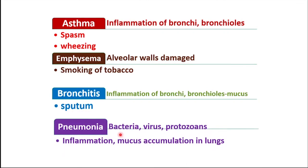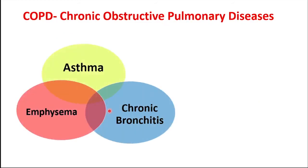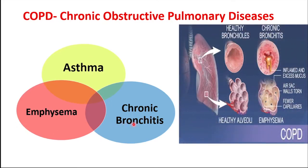The fourth disorder is pneumonia, caused by bacteria known as Streptococcus pneumoniae. Viruses, protozoans, and mycoplasmas also cause pneumonia. The main symptoms are inflammation and mucus accumulation in the lungs. Asthma, emphysema, and chronic bronchitis come under chronic obstructive pulmonary diseases (COPDs) — the group of lung diseases that block the airflow and make breathing difficult. Mainly emphysema and chronic bronchitis are the most common conditions that make up COPD. Once damage is done to the lungs by these disorders, the damage cannot be reversed.